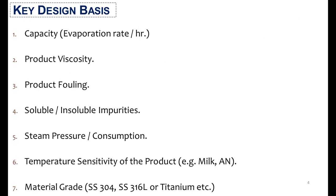An evaporator is designed on the basis of 7 parameters. The first is the capacity, which reflects the evaporation rate and the product viscosity, product fouling, soluble and insoluble impurities, steam pressure and its consumption, temperature sensitivity of the product — like for milk or ammonium nitrate — and the material grade.